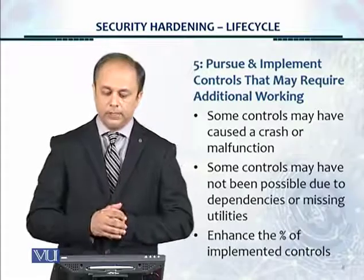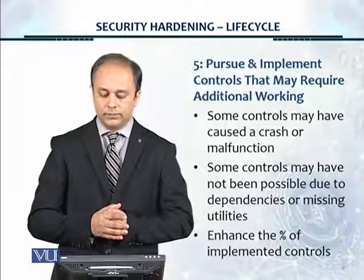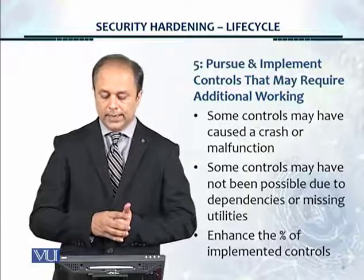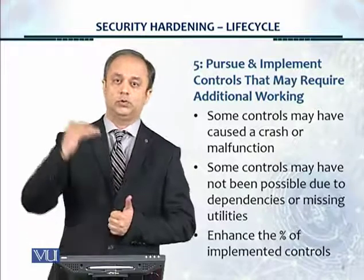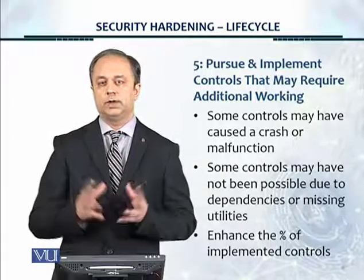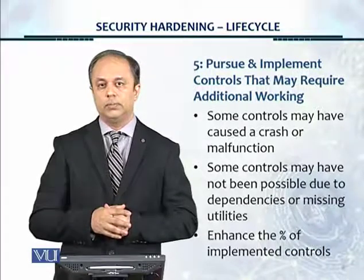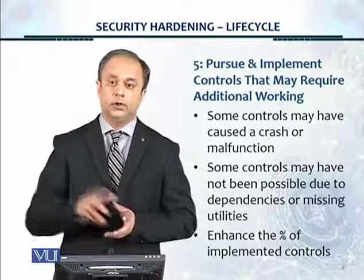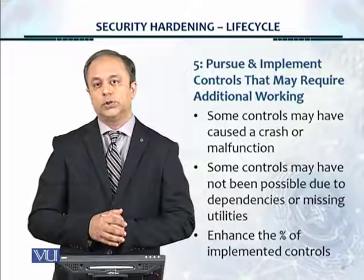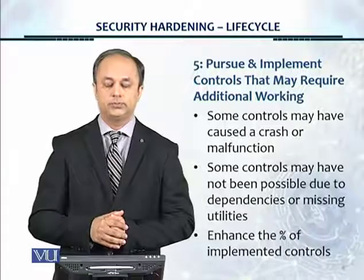Number five: pursue and implement controls that may require additional working. Some controls may have caused a crash or malfunction; some may not have been possible due to dependencies or missing utilities. Enhance the percentage of implemented controls — 100% is the perfect situation. If there are 400 controls for Windows Server 2012 R2, ideally all 400 should be implemented. If you implemented 350 in your first run, that's a great achievement, and further in the lifecycle you should implement the additional controls that were left over. That's all for this module. Thank you.